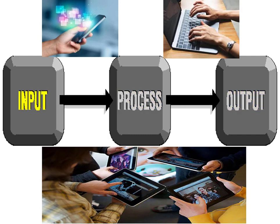A PC, or personal computer, is a computer that can perform all of its input, processing, output, and storage activities on its own, and it's intended to be used by a single person at a time. A mobile computer is a portable personal computer — your phone, tablet, or similar device. These are designed the same way as standalone computers but are made so we can carry them from place to place and use them whether connected or not connected to the internet.